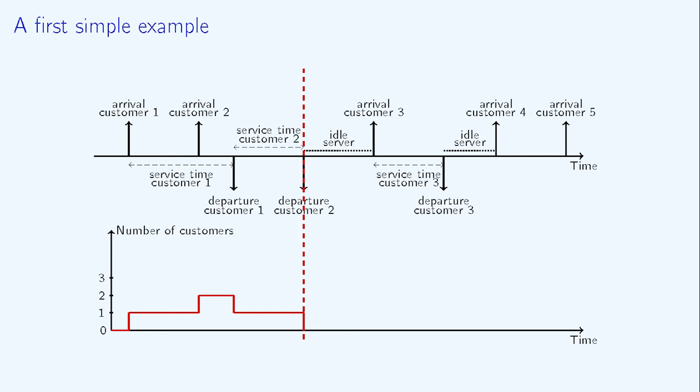When the second customer has been served, the system is empty and the server is idle since no new customers have arrived in the meantime. We could go on like that with any further customers.